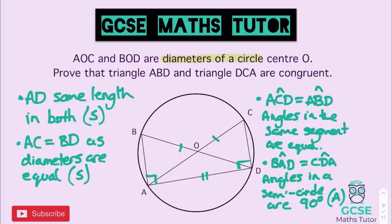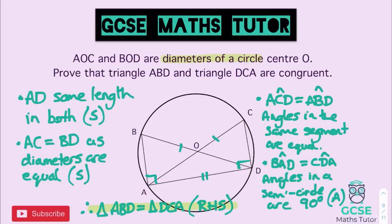We have a right angle, the hypotenuse (the diameter), and the side AD — forming a right-hypotenuse-side (RHS) triangle. Therefore, triangle ABD is congruent to triangle DCA by RHS. We could also have used angles in the same segment for two angles and a side (AAS), but the RHS approach is probably simpler. There are often different valid proofs for the same diagram.